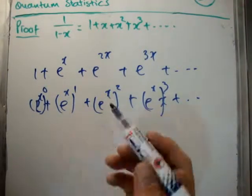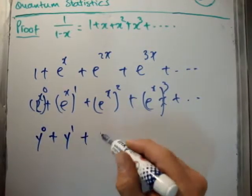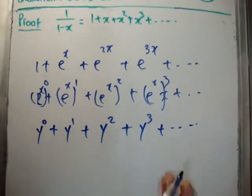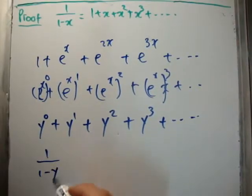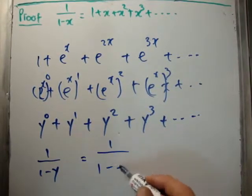let's call e to the x as y. So you have y to the 0, y to the 1, y to the 2, plus y to the 3, and so on. Or we have 1 over 1 minus y, which is equal to 1 over 1 minus e to the x.